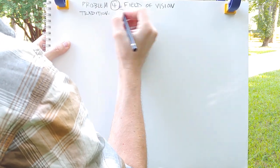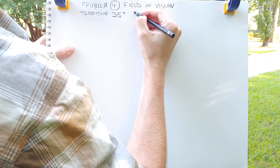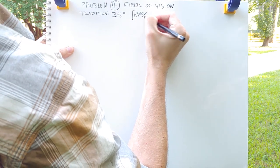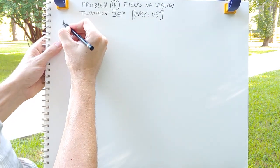Another big issue in landscape drawing is field of vision. It's much bigger in linear perspective but it holds true in landscape as well. Tradition says 35 degrees is the proper field of vision.